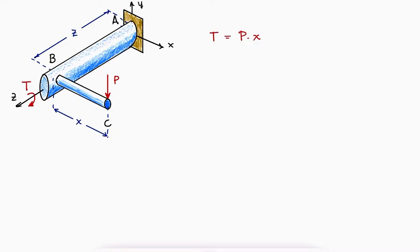However, the distance z times the external load P will create a moment about the x-axis, and we still call it a moment, m sub x if we want to label it properly.